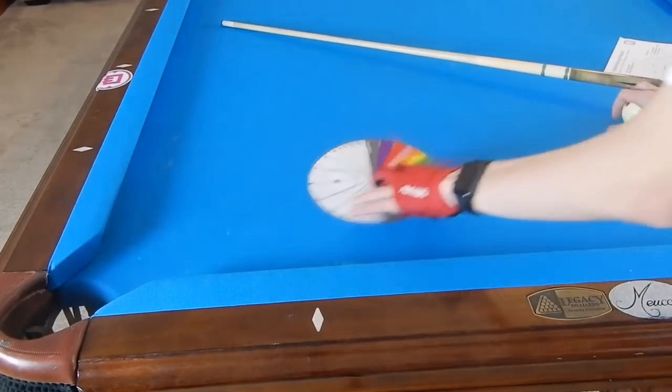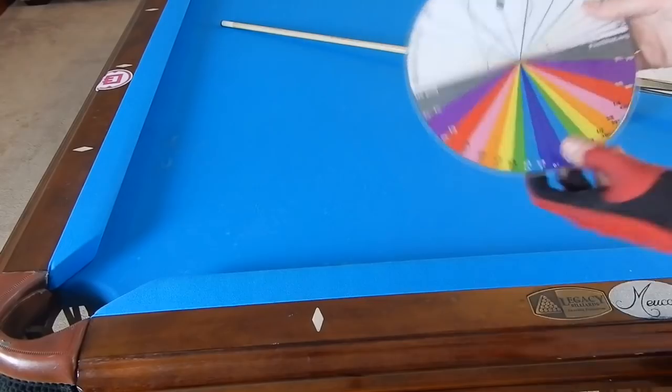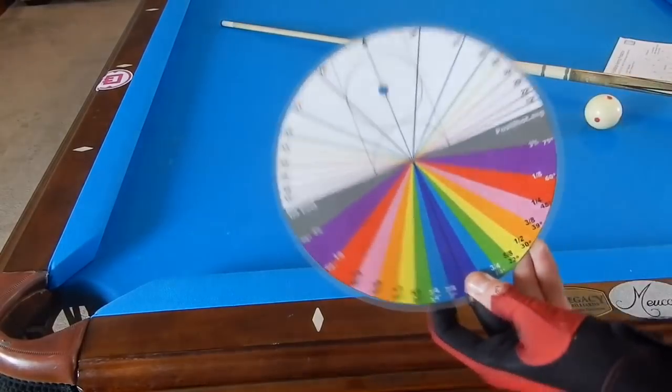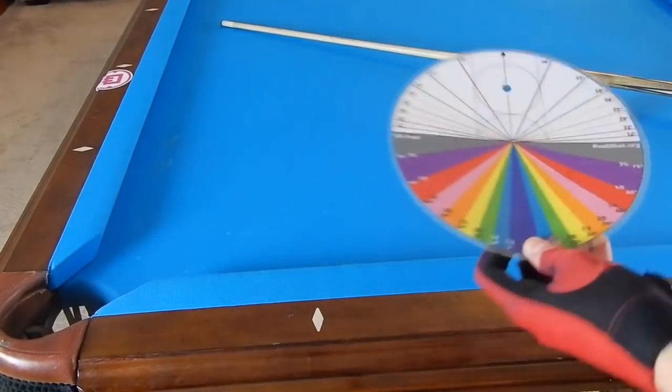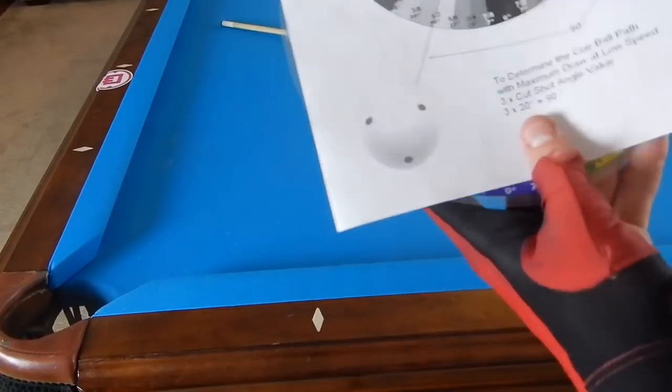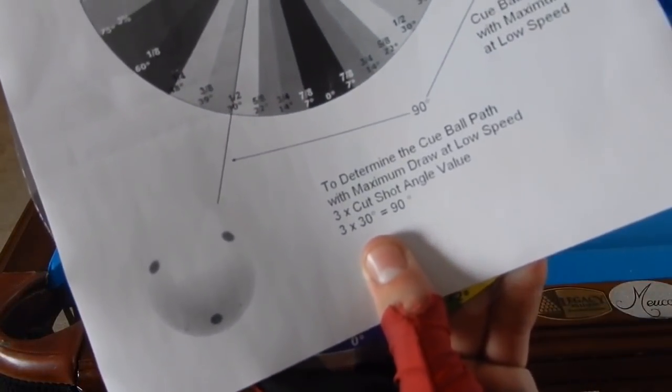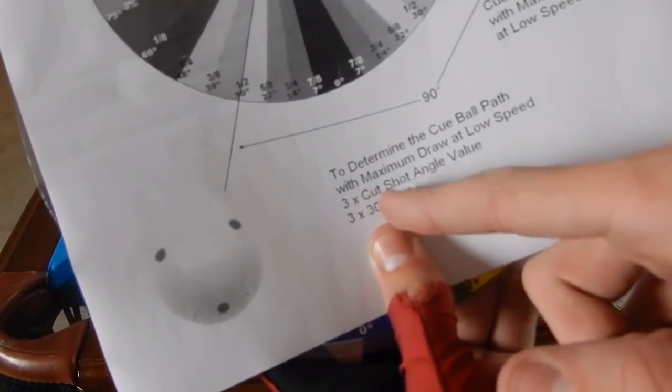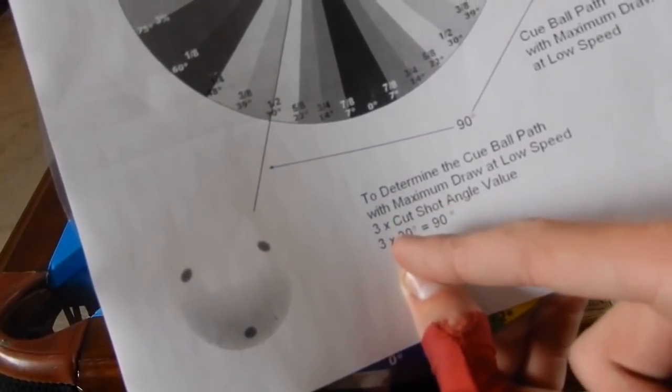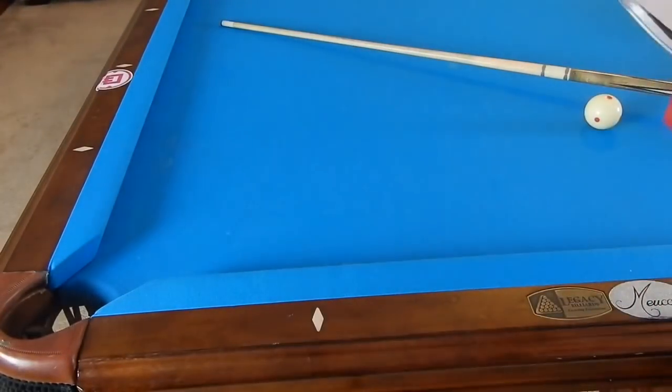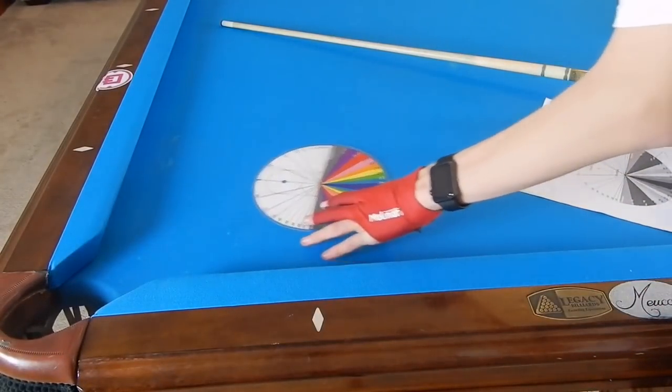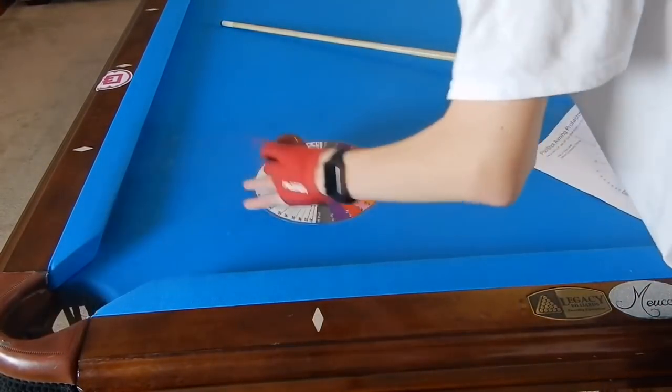The bottom half is for draw angles. They send you this little sheet that gives you this rule: to determine the cue ball path with maximum draw, multiply the cut shot angle value by three. So if we're cutting the ball 30 degrees, our draw angle will be 90 degrees.